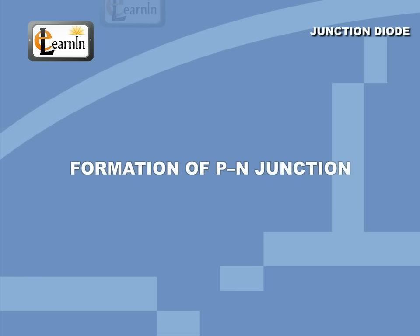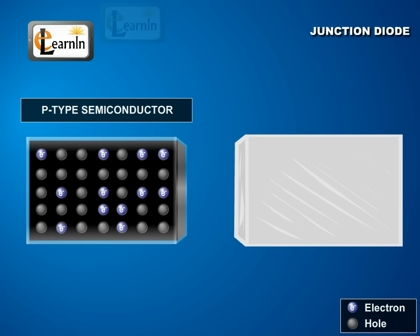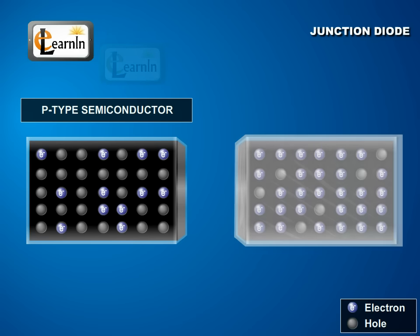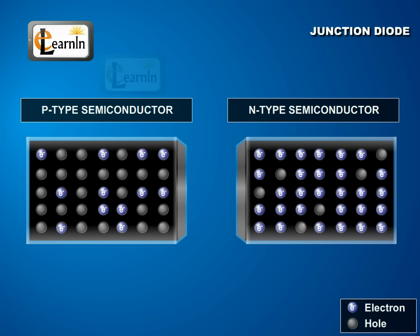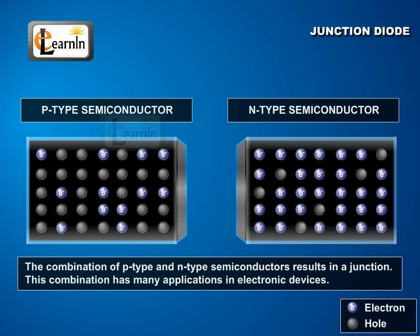Formation of the PN junction. The P-type semiconductor has an excess number of holes. Therefore, holes are the majority carriers of charge in P-type semiconductors, as shown. Similarly, N-type semiconductors have an excess number of electrons. Therefore, electrons are the majority carriers of charge in N-type semiconductors, as shown.